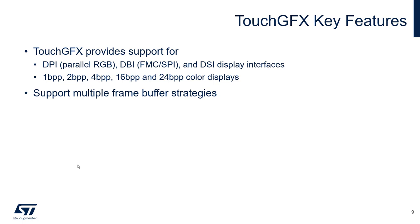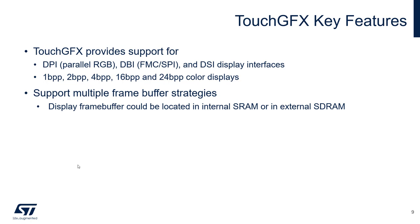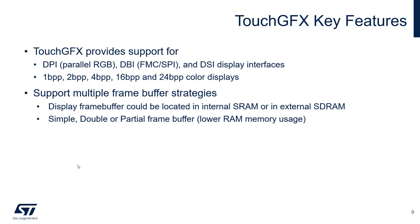It also supports multiple frame buffer strategies. The frame buffer can be located either in internal SRAM or external SRAM, and it supports single, double, and also partial frame buffers. The partial frame buffer strategy means not having a dedicated full-frame memory area, but only a few lines. The graphical library uses these few lines to refresh a full screen in several passes — this is done internally; the user only declares the size of the frame buffer available depending on the RAM available on the chosen MCU.